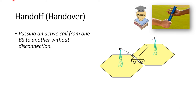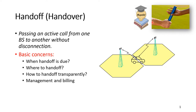Let's now cover handoff or handover, depending on your accent — US or UK. Handoff is when you are passing an active call from one base station to another without disconnection. This happens with mobile users; for example, if a car is moving, you need to hand over the user from one base station to another. There are some basic concerns: when handoff is due, where to hand off, and how to hand off.